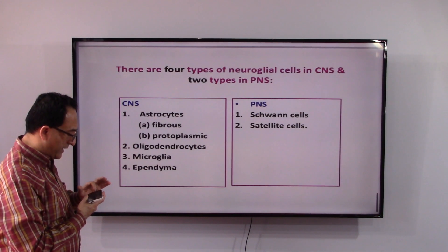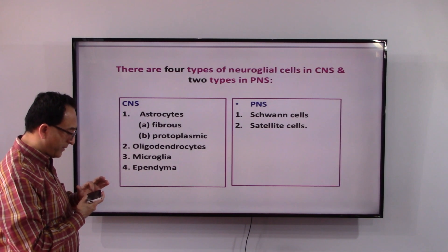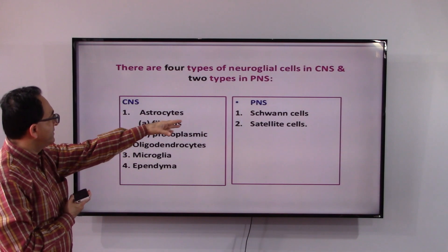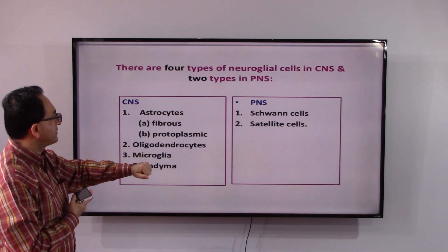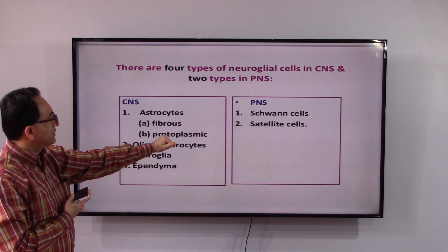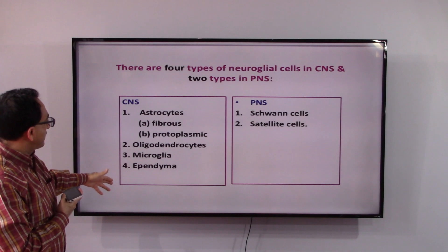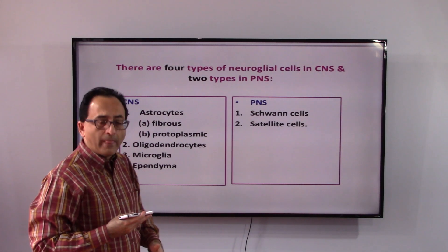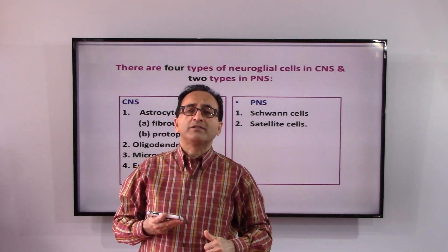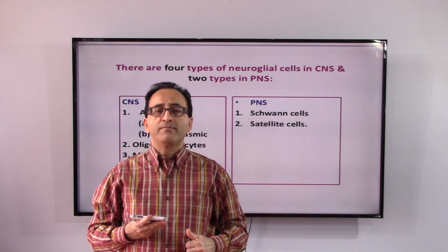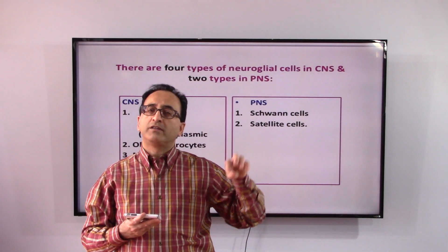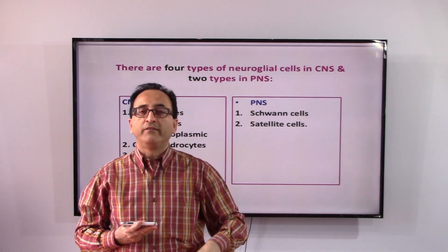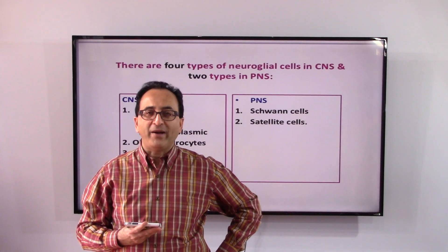To summarize, in the central nervous system we have four glial cell types, and in the peripheral nervous system we have two. We still have a lot to cover on the central nervous system. This concludes our discussion of the different types of cells — neurons and nerves. We'll move on when we meet again. Take care, bye bye.